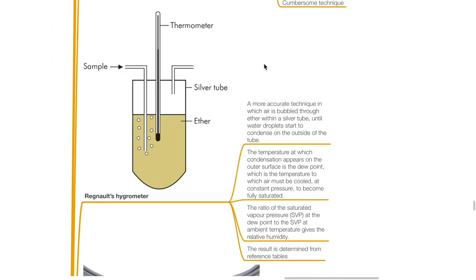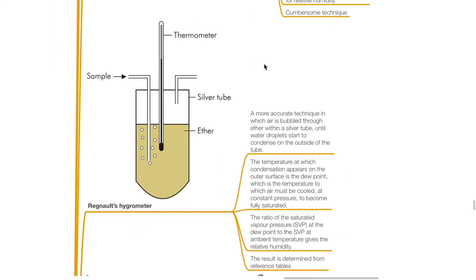Regnault's hygrometer is a more accurate technique in which air is bubbled through ether within a silver tube until water droplets start to condense on the outside of the tube. The temperature at which condensation appears on the outer surface is the dew point — the temperature to which air must be cooled at constant pressure to become fully saturated. The ratio of saturated vapor pressure at the dew point to the SVP at ambient temperature gives the relative humidity, determined from reference tables.